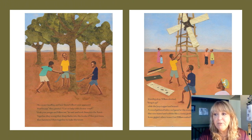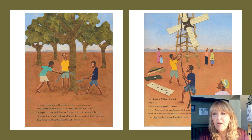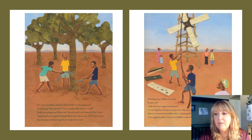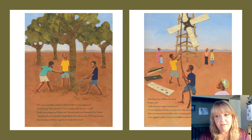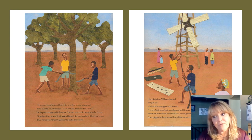His cousin Jeffrey and best friend Gilbert soon appeared. Moolibangie! They greeted. Can we help with electric wind? Grab your pangas and follow me, he said, and took them into the forest. Together they swung their sharp blades into the trunks of blue gum trees, then hammered them together to make the tower. Standing atop, William shouted, bring it up! While the boys tugged and heaved, a crowd gathered below and gazed at this strange machine that now leaned and wobbled like a clumsy giraffe. Some giggled, others teased, but William waited for the wind.